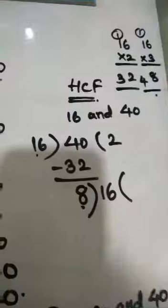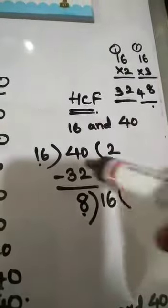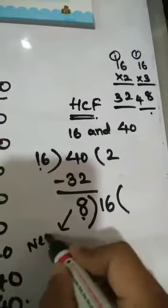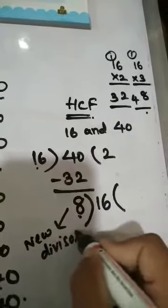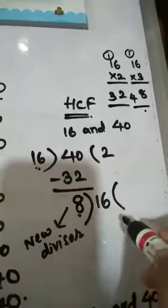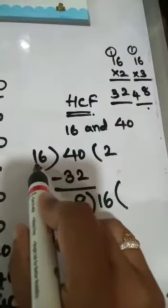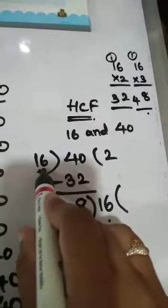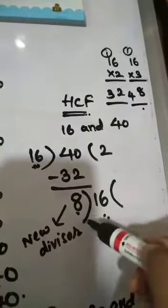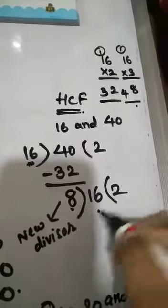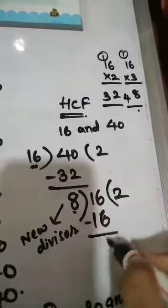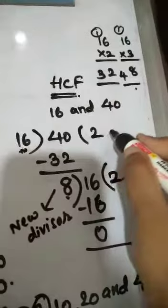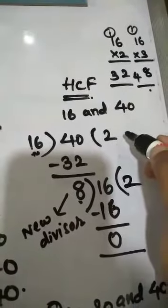Now this remainder 8 becomes the new divisor, and we have to consider the old divisor 16 as the new dividend. So 16 divided by 8: 8 twos are 16, 16 minus 16 equals 0. So our new divisor is the HCF. HCF of 16 and 40 equals to 8.